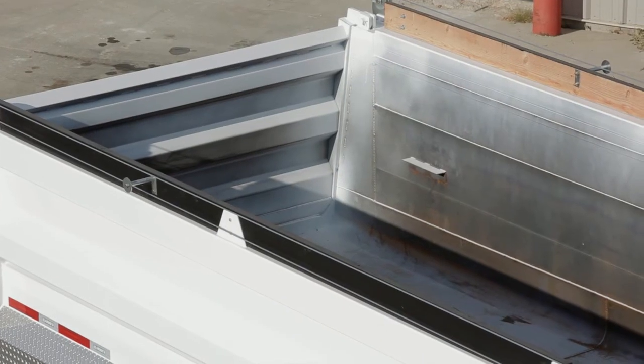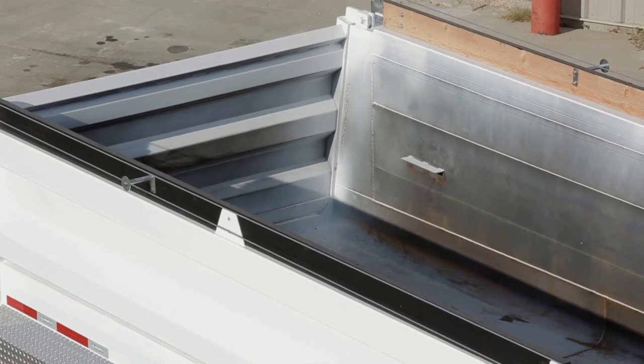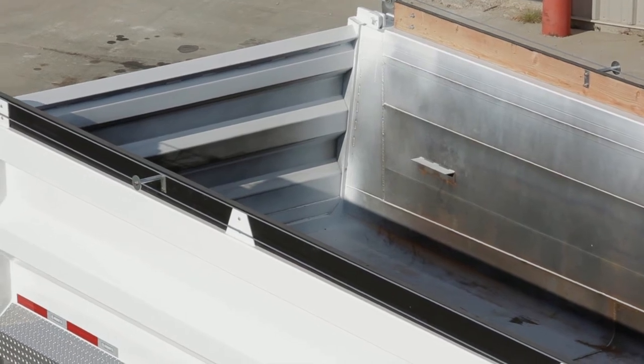Formed ribs into the front wall significantly increase the strength of the bulkhead without adding weight.